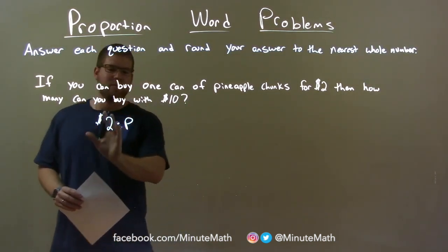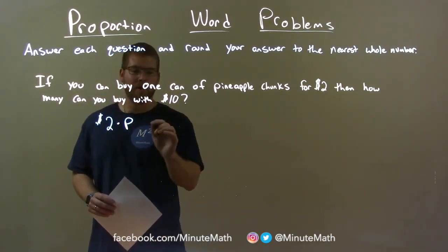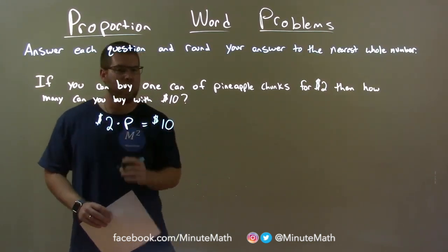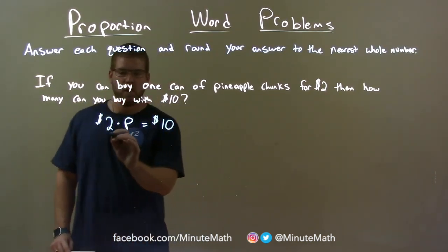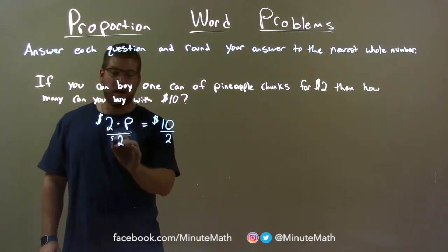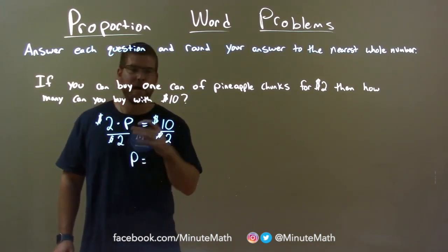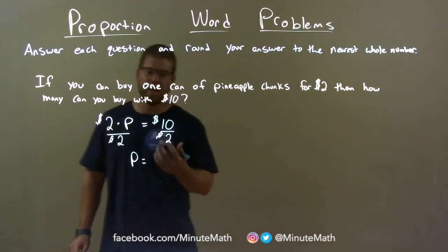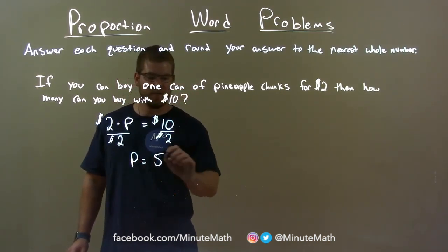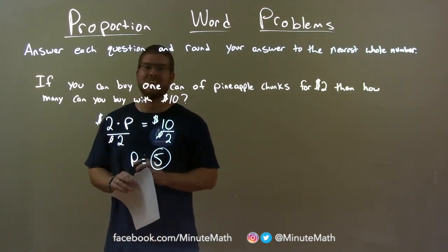We now have $2 times P, and we're going to see how many we can buy with a total of $10. We set that equal to $10 and solve for P. Divide both sides by 2 — that gives us P, the number of pineapple chunks we can buy. 10 divided by 2 is 5, so our answer is 5. We can buy 5 pineapple chunks with $10.